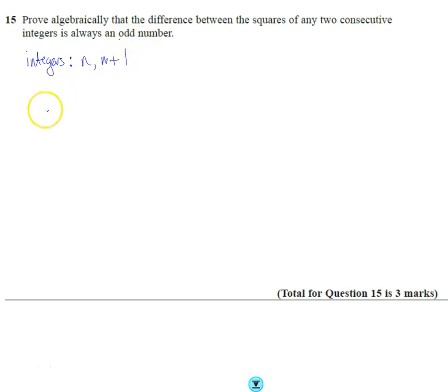So the difference between two squares as well, one of them is going to be n squared, and then if we take the second integer, n plus 1 squared is going to be n squared plus 2n plus 1.